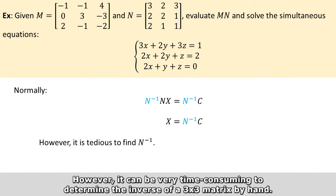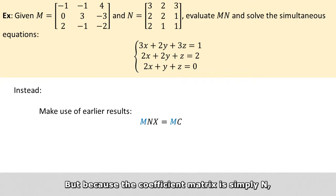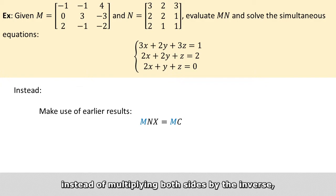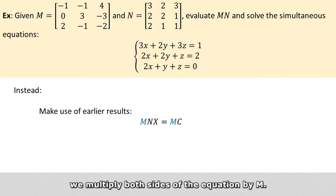it can be very time-consuming to determine the inverse of a 3x3 matrix by hand. But because the coefficient matrix is simply N, instead of multiplying both sides by the inverse, we multiply both sides of the equation by M.